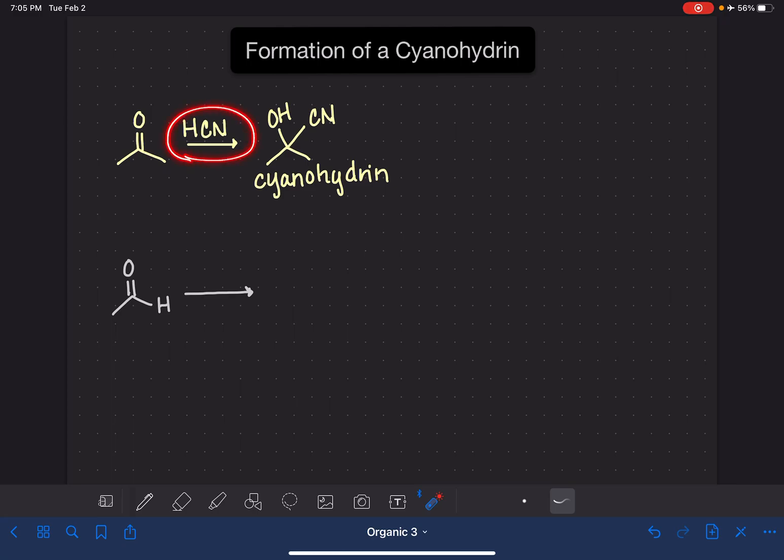Sometimes the reagents for this reaction are listed as HCN with KCN or HCN with CN minus. That additional cyanide ion in KCN or CN minus is used to help shift the position of equilibrium to the right. This reaction is an equilibrium reaction, so the cyanide ion helps increase the formation of the product.